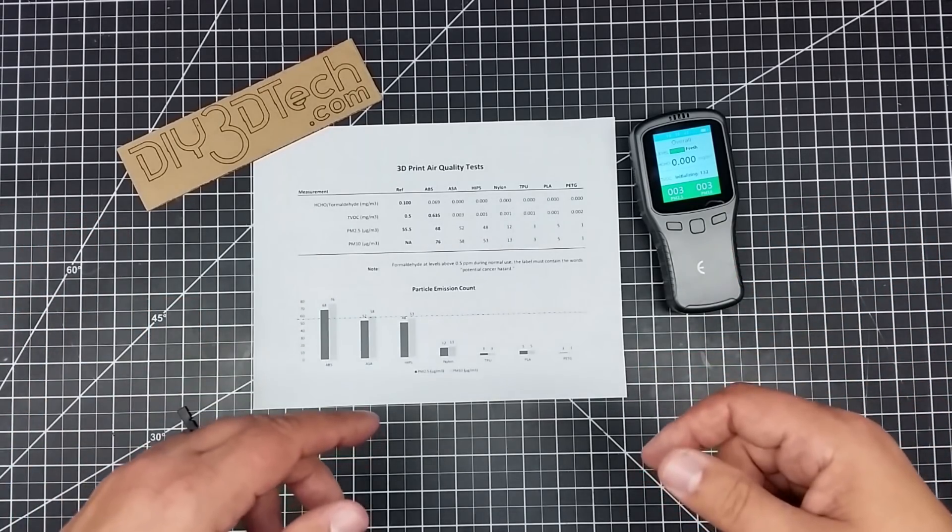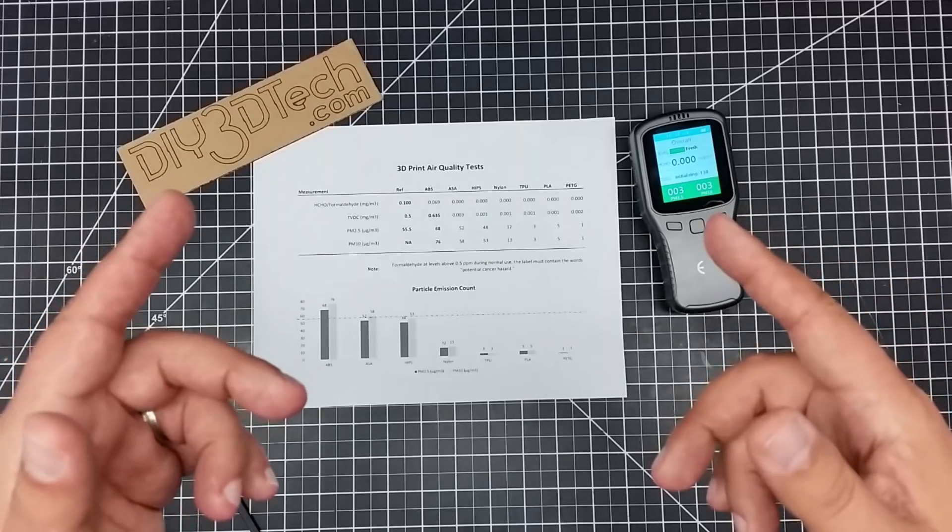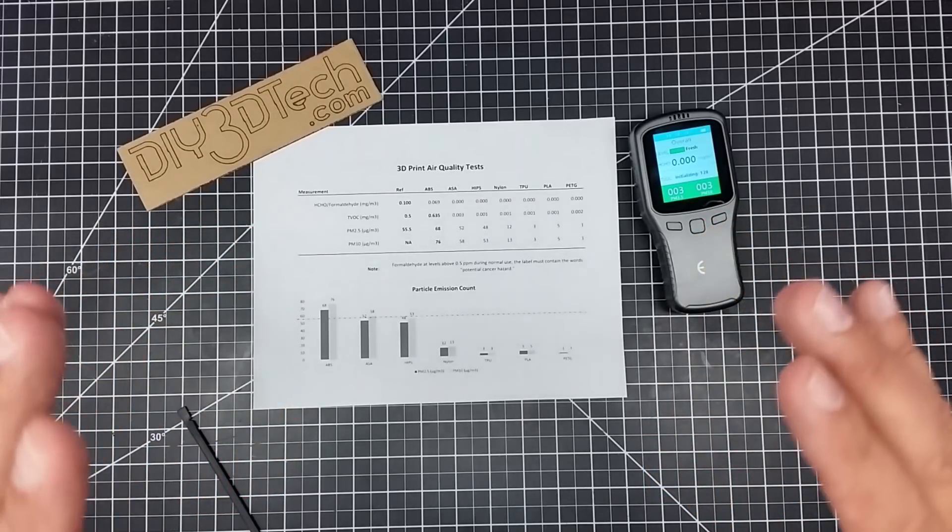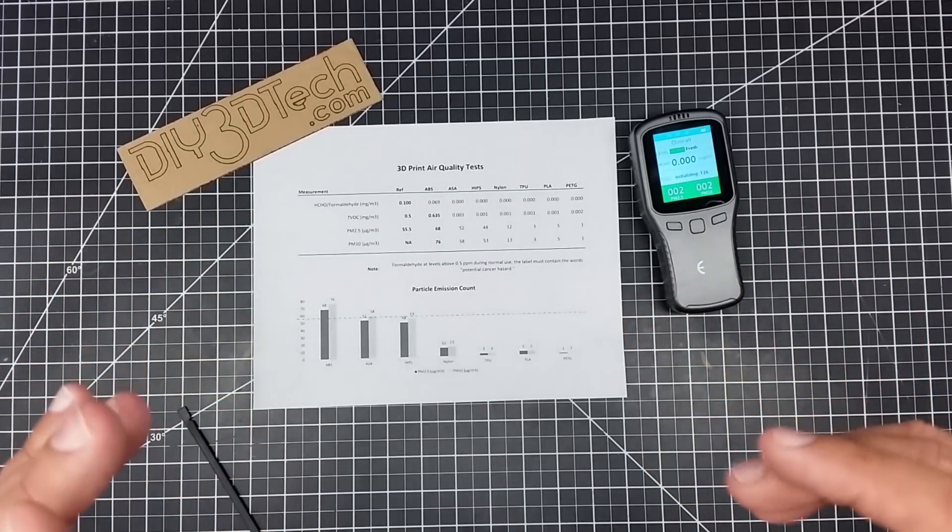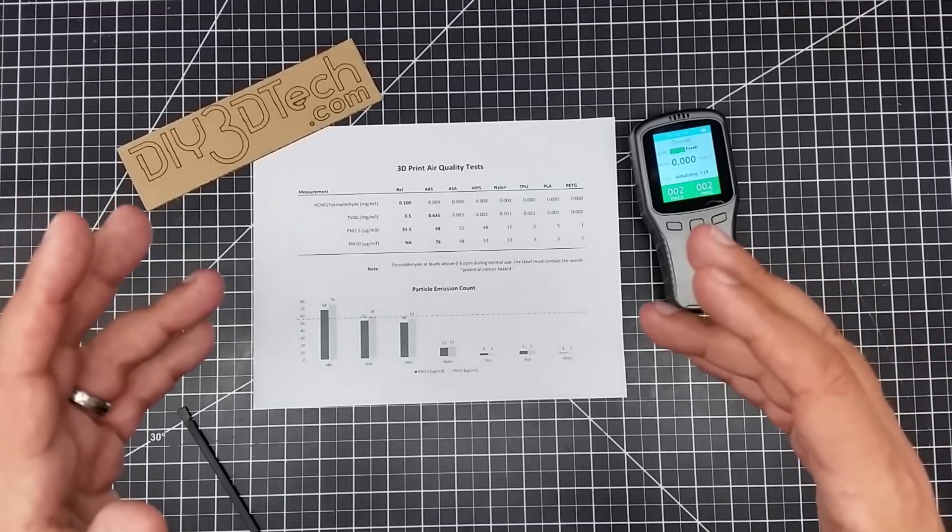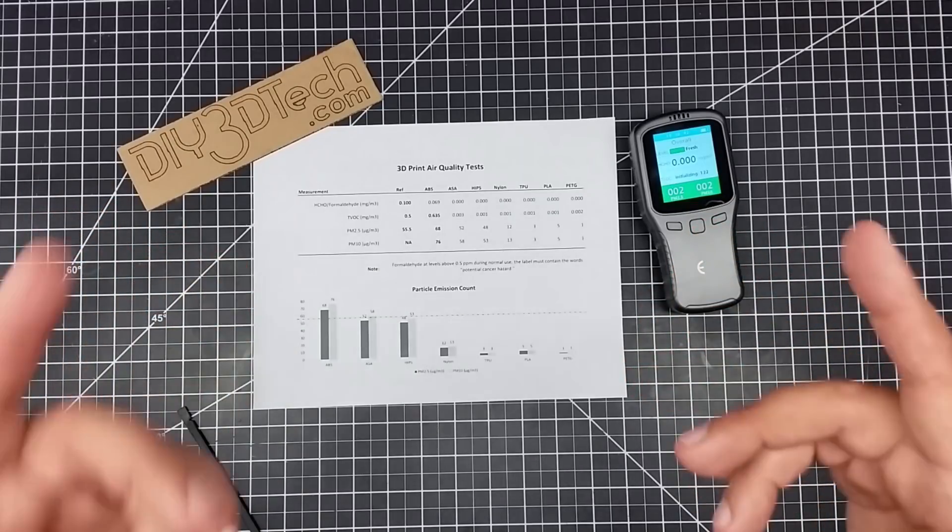Unfortunately, work demands have kept me away from this, but I've finally gotten around to it. So basically what we're going to do here is just summarize the different plastics and what we found with each. Now, before we get going, my standard disclaimer.